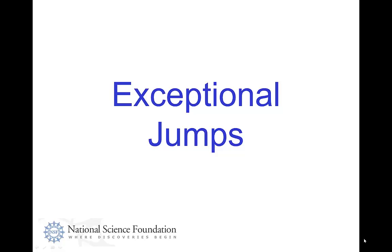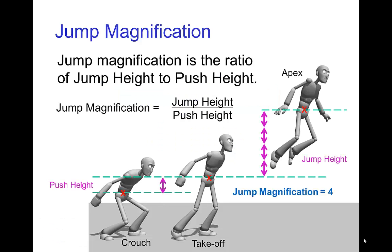Exceptional jumps. In the previous tutorial, we talked about jump magnification. Jump magnification is the ratio of the jump height to the push height. So if a character jumps four times higher than the distance that they pushed off the ground, that would be a jump magnification of four.